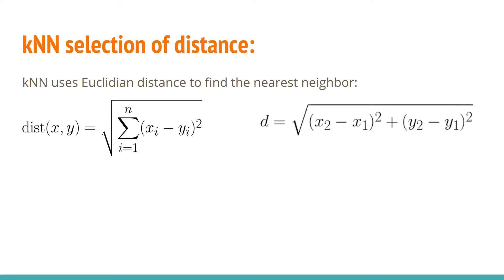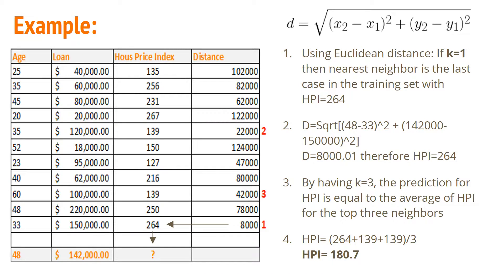For example, if we go to the example I have here, we have a dataset with two features: age and loan. Then we have a value to predict, and that's the house price index here with the question mark. Our new value or point is at age 48, and all other instances in this table or examples that we will be comparing this new point to. We are using Euclidean distance to find the distance between our new point and all the other examples. If we are using the Euclidean distance and we assign K equal to 1 to find the nearest neighbor, the nearest neighbor is the last case in the training set with the house price index 264 because it has the minimum distance, which is 8,000 in this case.